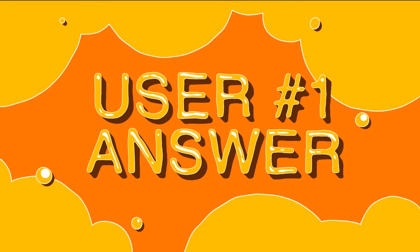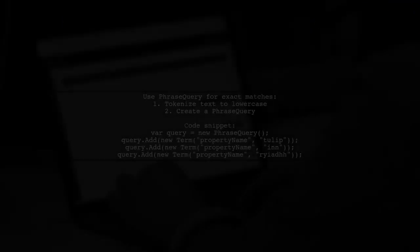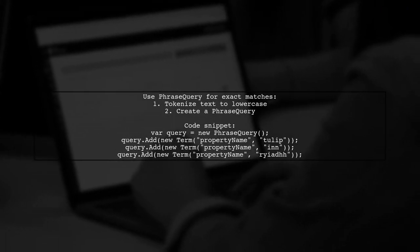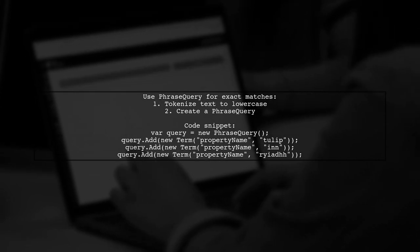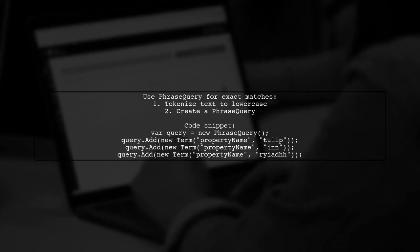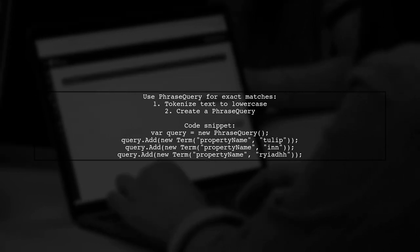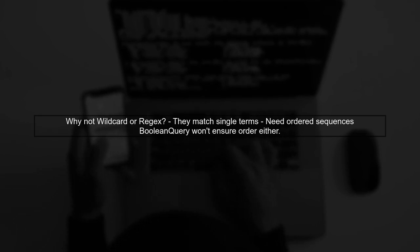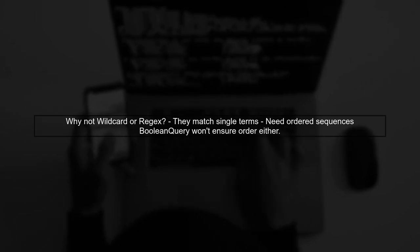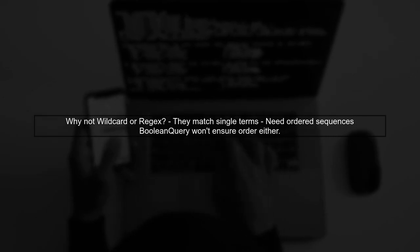Let's now look at a user-suggested answer. To match an entire sentence with spaces in Lucene, you should use a phrase query. This query looks for an ordered sequence of tokens. For example, if your text is tokenized into lowercase terms like "tulip", "in", and "riad", a phrase query will find them in that exact order. Remember, using wildcard query or regex query won't work here because they match single terms, not ordered sequences. A Boolean query with term query clauses would also not give you the desired order.